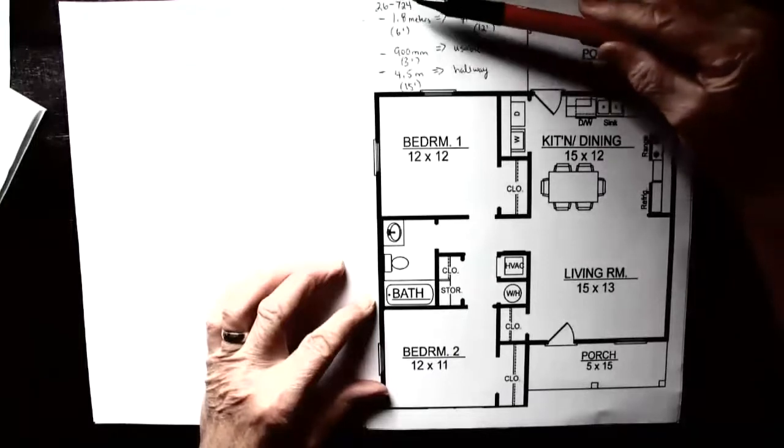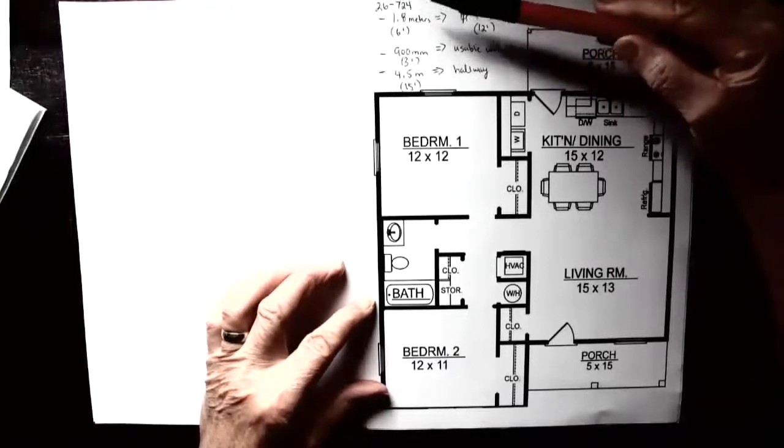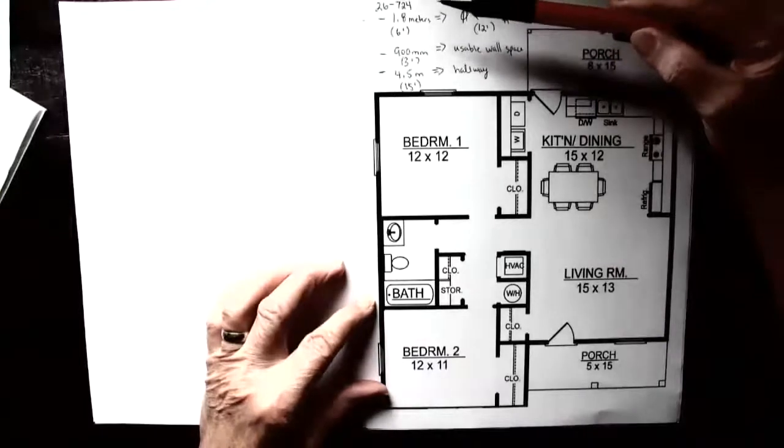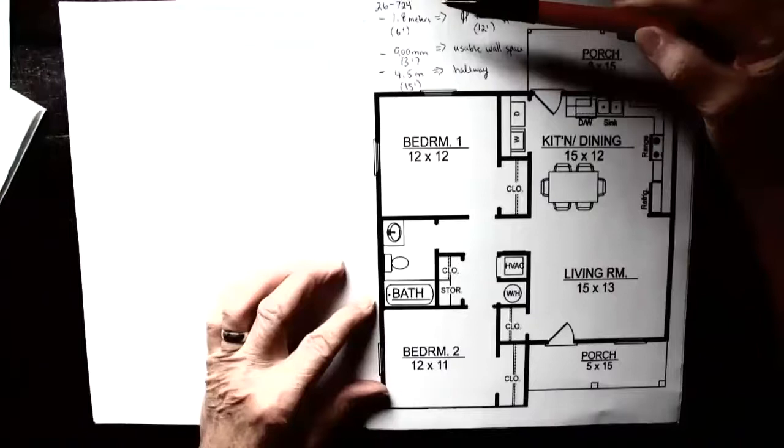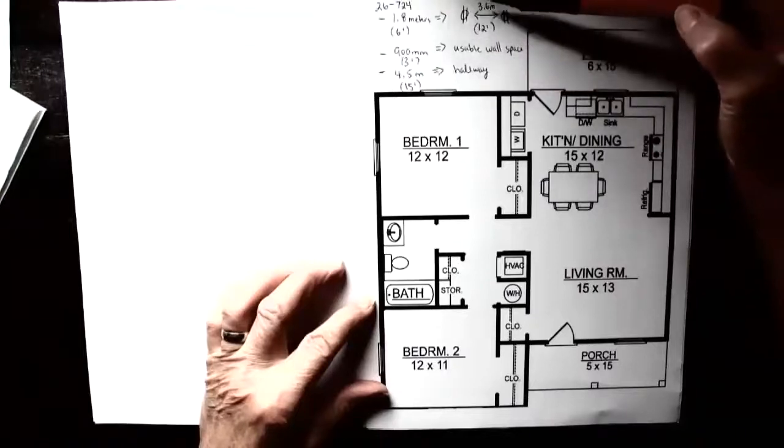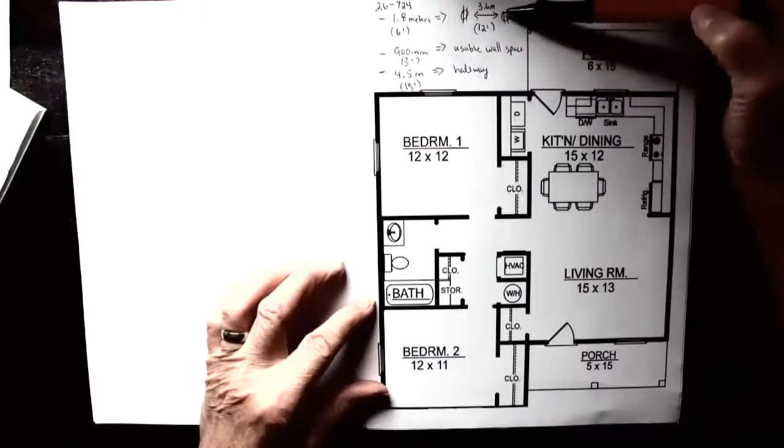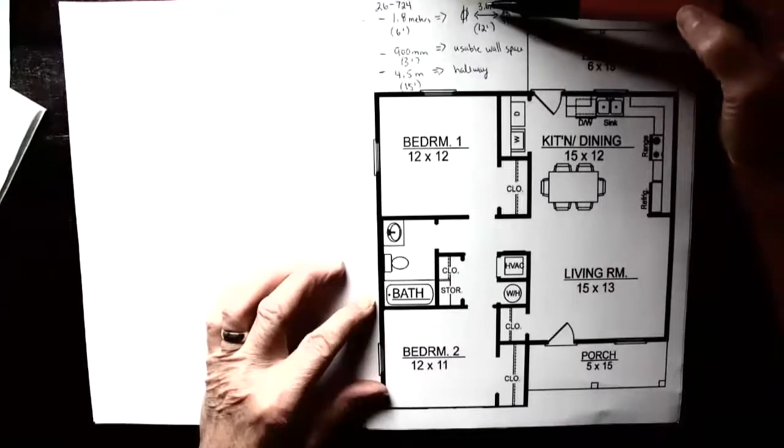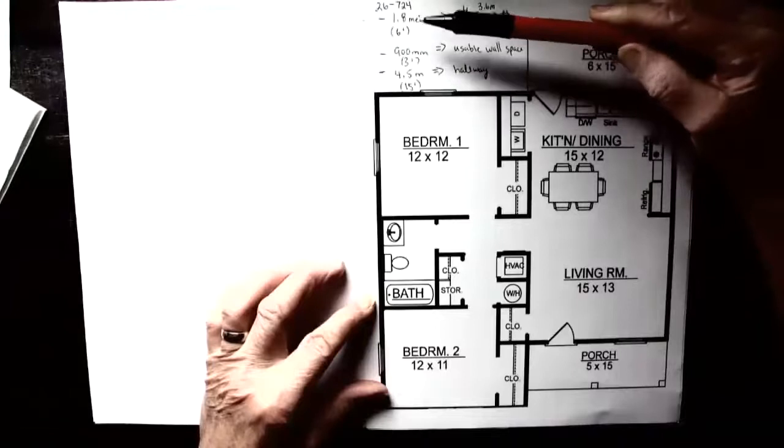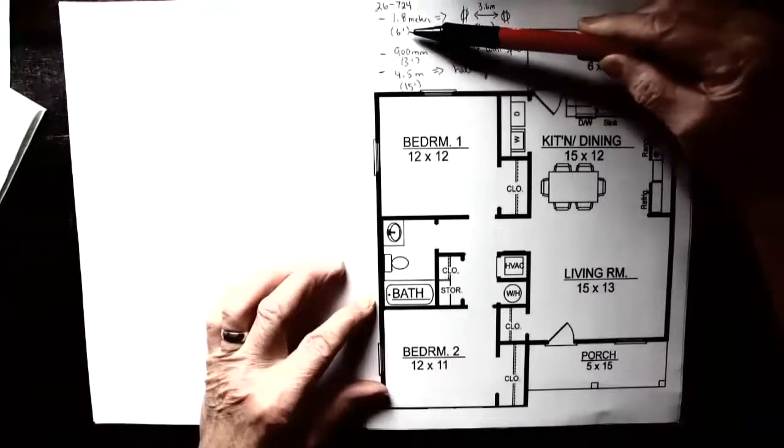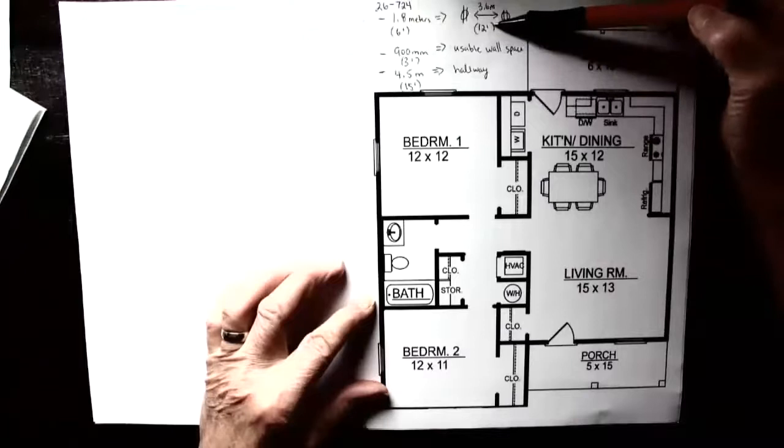In Rule 26-724, it tells us that no point along the wall can be more than 1.8 meters away from a receptacle. In other words, between two receptacles, we can go a maximum of 3.6 meters. In feet and inches, that's 6 feet and 12 feet between.